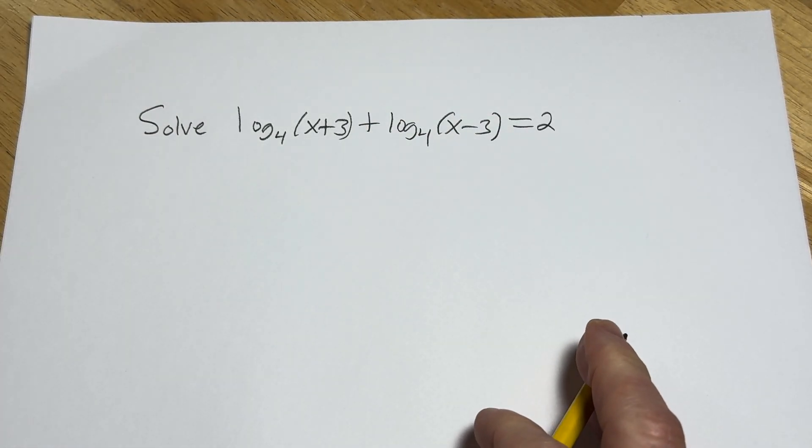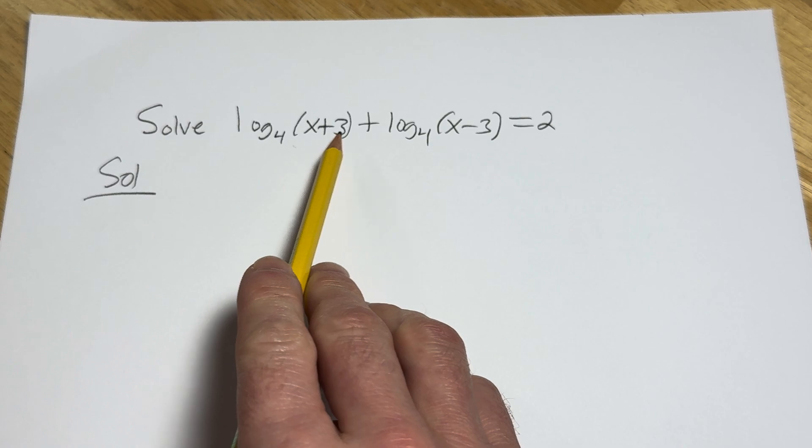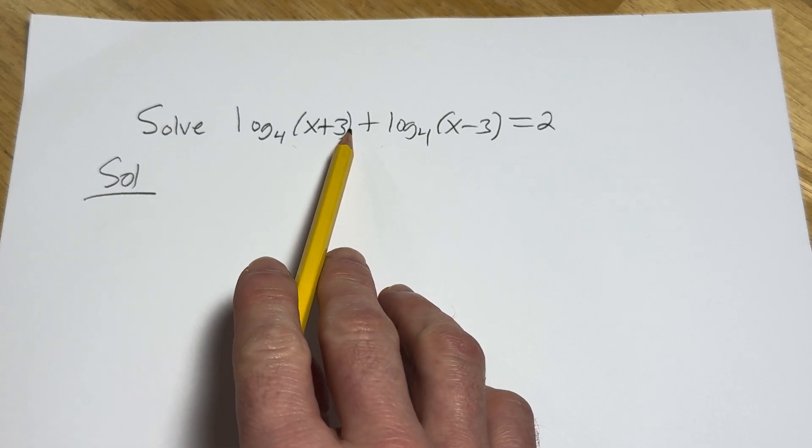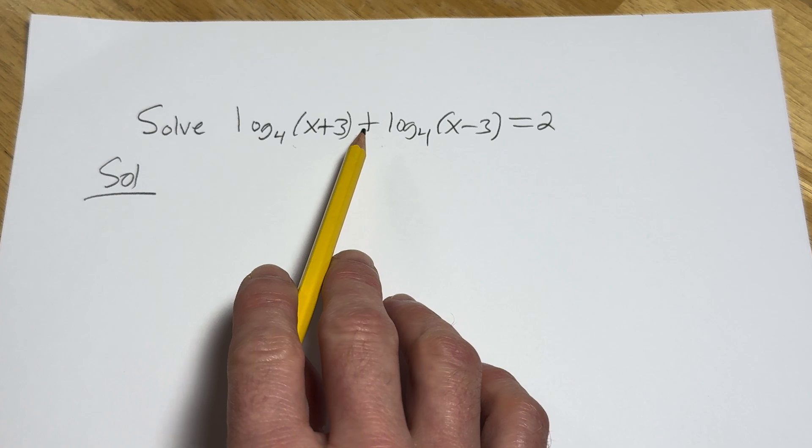Okay, so we have an equation here with two logarithms that we have to solve. Let's go through it. So when you have an equation like this with two logs and a plus sign in between, you want to use something called the product rule for logarithms.